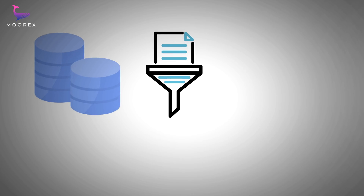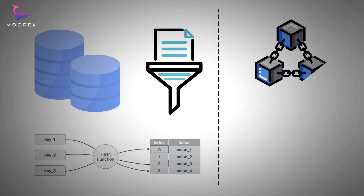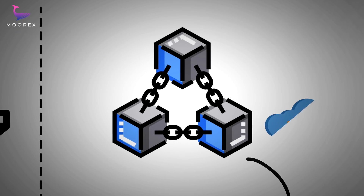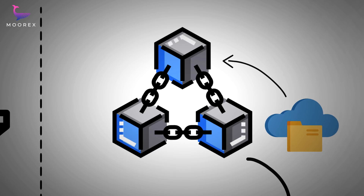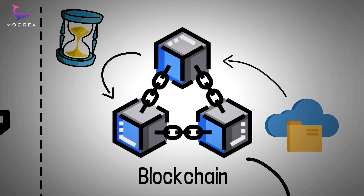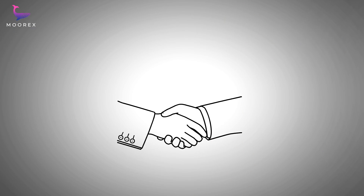A blockchain is a database, but they differ in how data is structured. A regular database usually structures its data into tables, while a blockchain collects information together in groups known as blocks, which hold sets of information. Each block has a certain storage capacity — when filled, it is closed and linked to the previously filled block, forming a chain of data known as the blockchain. All new information is then compiled into a newly formed block, and each block is given an exact timestamp when it is added to the chain.